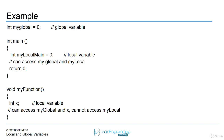You need to understand the concept of local versus global. Local variables are inside blocks of code and can only be used within that block. If a variable is outside of a block — declared at the program level — you can access it in any function.